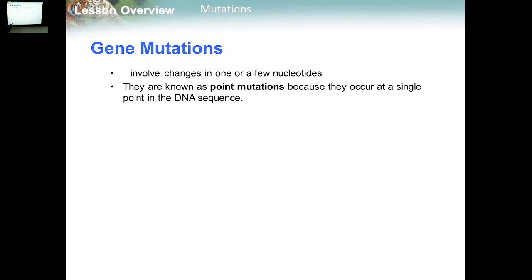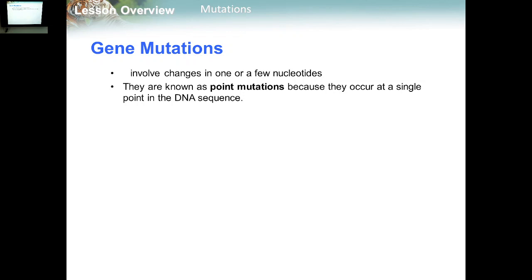Gene mutation involves changes in one or a few nucleotides — the A, C, T, G. If there is a change in one or a few nucleotides, we are talking about gene mutation. We also have point mutation, which is a single nucleotide change in the DNA sequence.